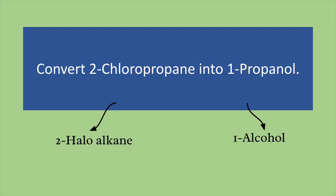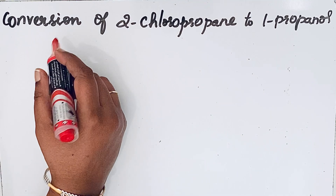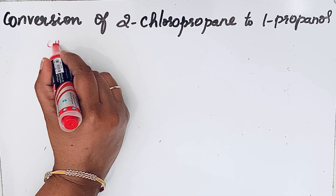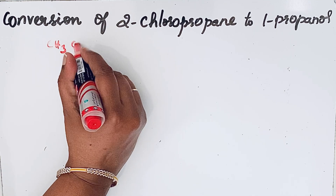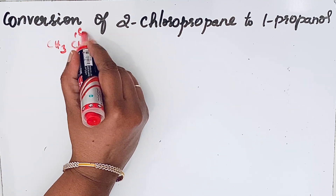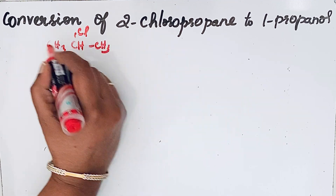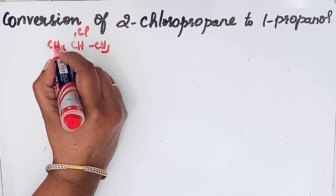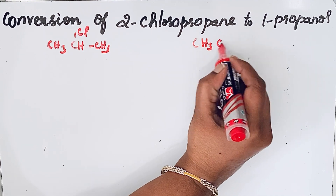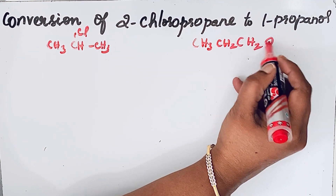First, let us write the structural formula of 2-chloropropane and 1-propanol. 2-chloropropane: CH3-CHCl-CH3. 1-propanol: CH3-CH2-CH2OH.